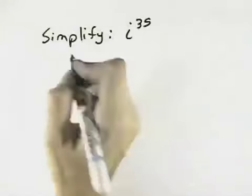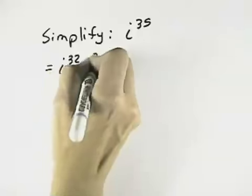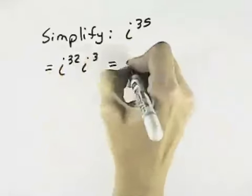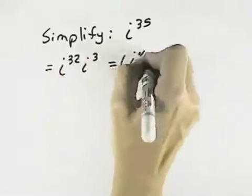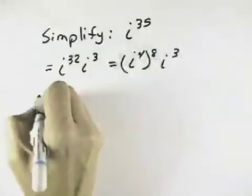So 35, if we reduce it to something that's a power of 4, we could say i to the 32nd power, that would leave 3 of them left over. Because i to the 32nd power is i to the 4th 8 times. And then we have i cubed left over.